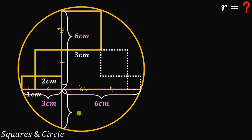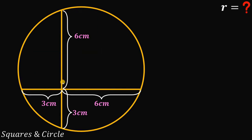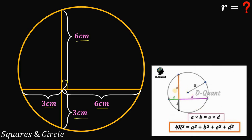To find the measure of the remaining segment, we can use the chord-chord power theorem or the symmetry of this figure. The remaining segment is just three centimeters. Now let's erase all the squares and keep this figure. These two chords are perpendicular to each other, and since we know the measures — six, six, three, and three centimeters respectively — we can use the relationship: 4r² = a² + b² + c² + d².